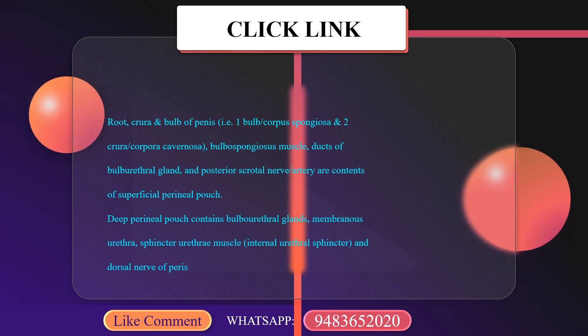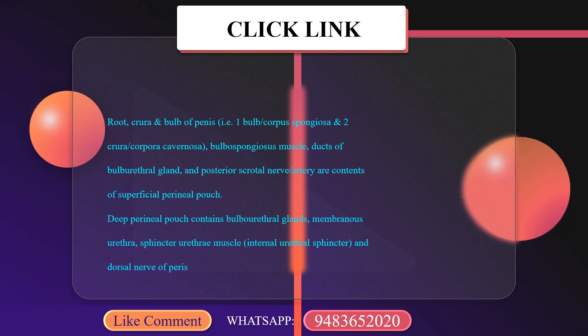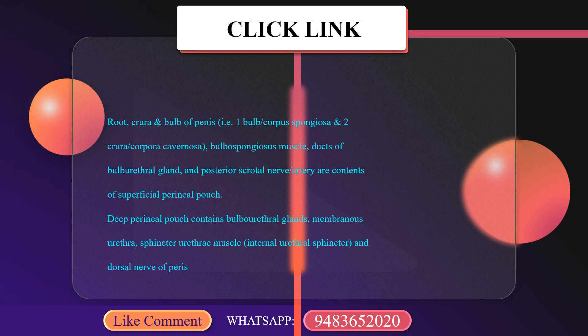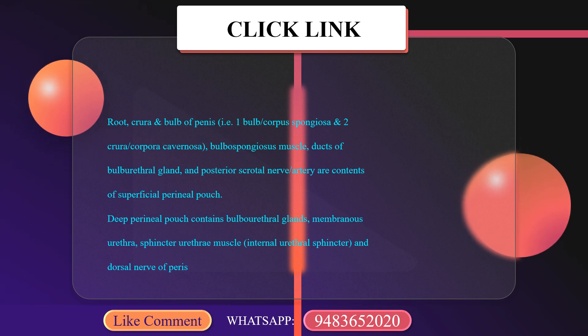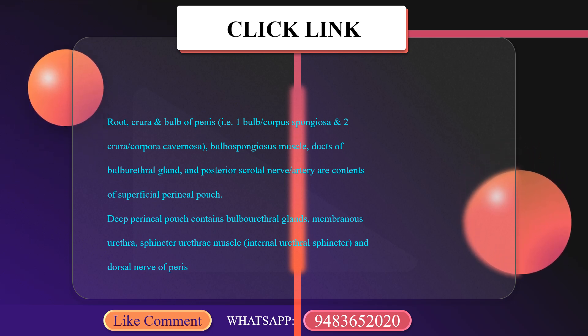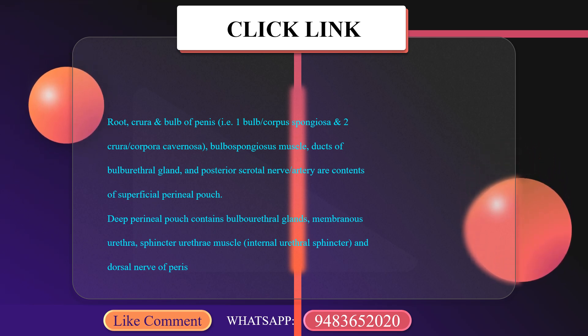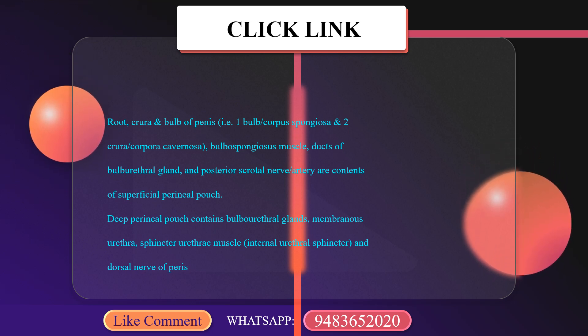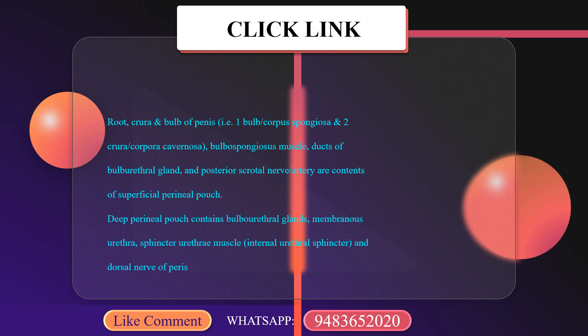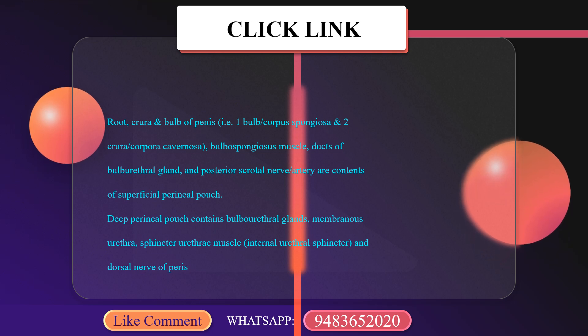The deep perineal pouch contains bulbourethral glands, membranous urethra, sphincter urethrae muscle (i.e., internal urethral sphincter), and dorsal nerve of penis.